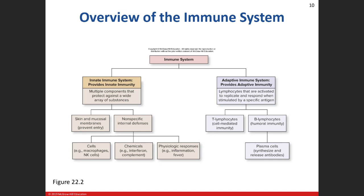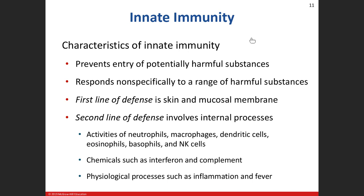Review figure 22.2 — this basically spells out some of the players involved. Here's your innate immune system involving the skin and mucosal membranes — we talked about the dendritic cells, macrophages in the skin, and some of the natural killer cells. For our non-specific internal defenses, let me just jump into it.